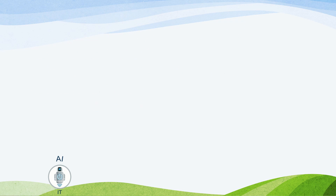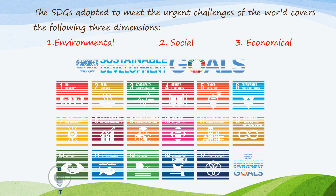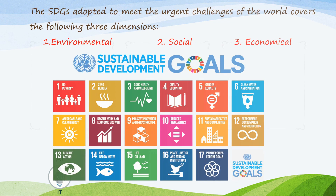The Sustainable Development Goals were adopted to meet the urgent challenges of the world, which covers the following three dimensions: environmental, social, and economical. The 17 Sustainable Development Goals to transform the world are as follows.